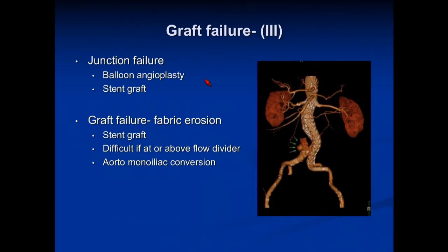Type 3 is graft failure. Here's an image of a fabric rupture distally. These can either be junction failures — if the two pieces of the stent graft are not opposing correctly, you will get endoleak — and this can be fixed either with ballooning or placing an intervening stent graft. Fabric erosion is much less common nowadays with modern stent grafts, more common in the early 2000s. Should you encounter one, it can be covered with another stent graft, which can be quite challenging if it's near or above the flow divider where there may not be sufficient room to land an aortic cuff — and there your bailout would be an aorto-monoiliac conversion.